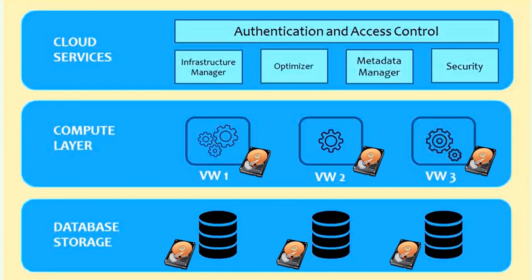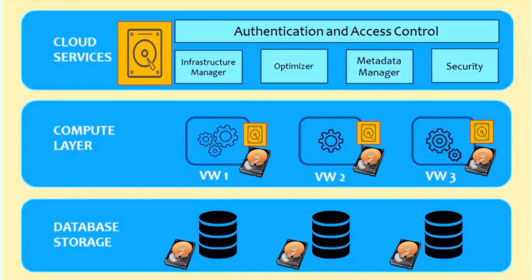Now let's understand where the caching areas are present. The very first caching area is in the cloud services layer — when we get the result for our query, that data gets cached there. So whenever the next request comes, it will use either the cache from the cloud services or the caching area present at the compute layer. There are two levels where caching happens: one in the cloud services layer and one in the compute layer. When you execute any query, it has two options to use the cache.